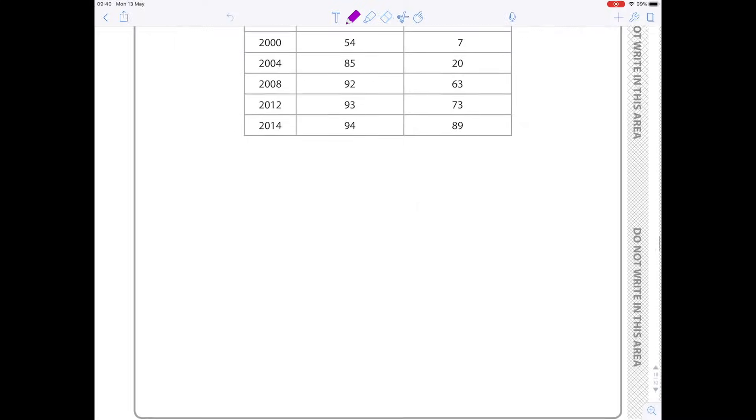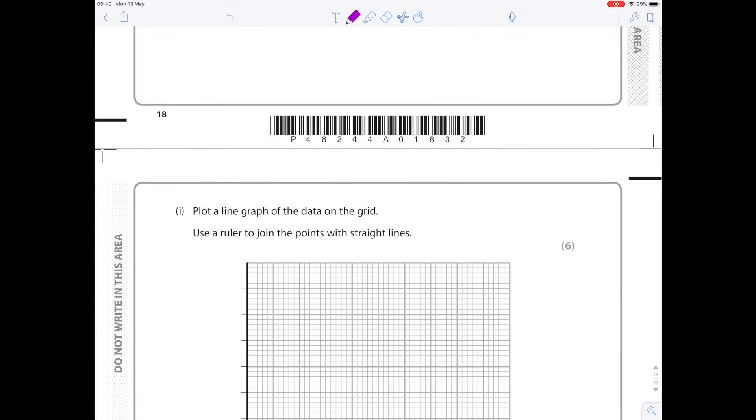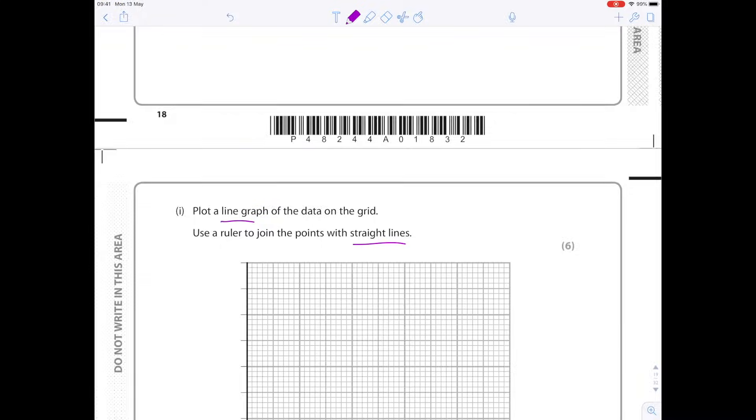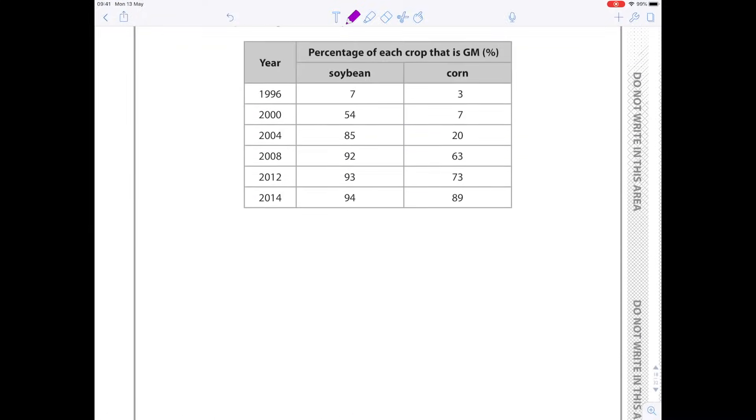Plot a line graph of the data on the grid, use a ruler to join the points with straight lines, and it's worth six marks. So it really is worth knowing how to do this. Notice we've got a line graph and it needs to be joined by straight lines. How do you know what goes on the x and the y axis? The real way of working this out is by understanding which of your variables goes on the x and the y axis.